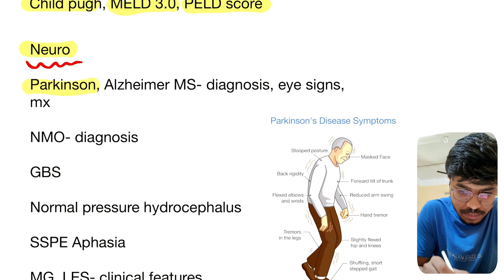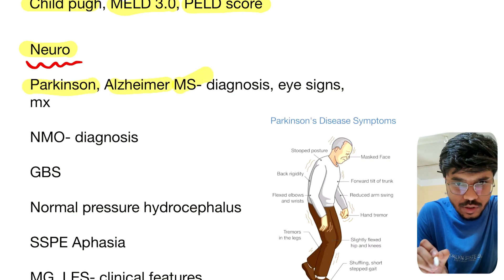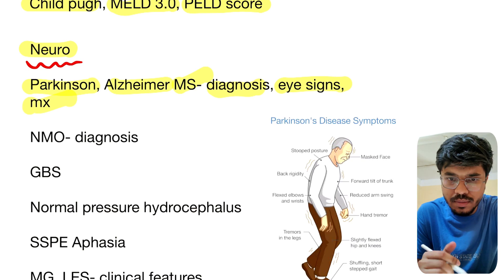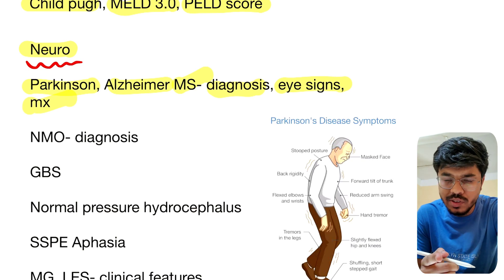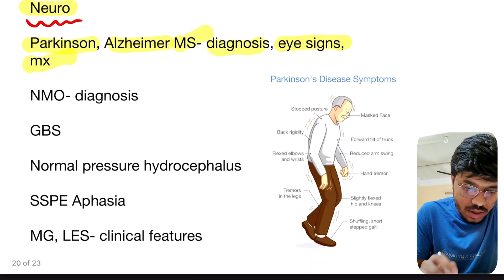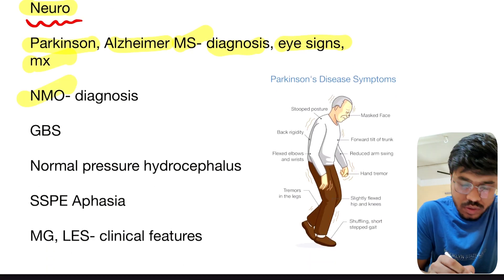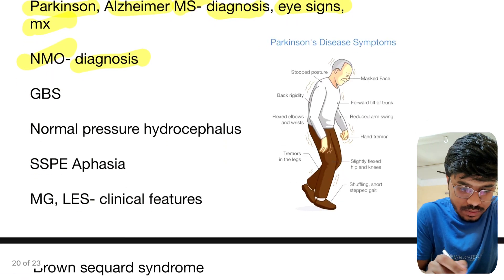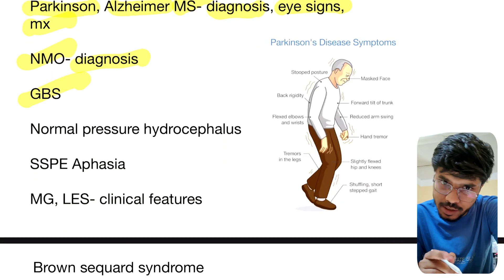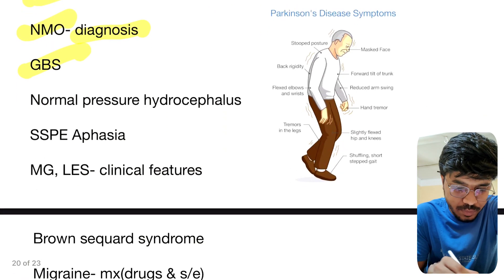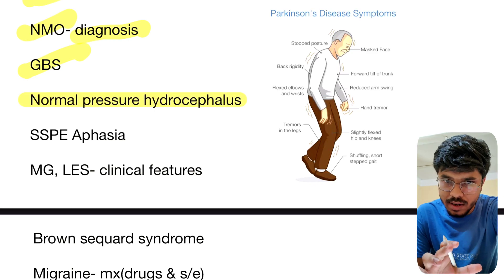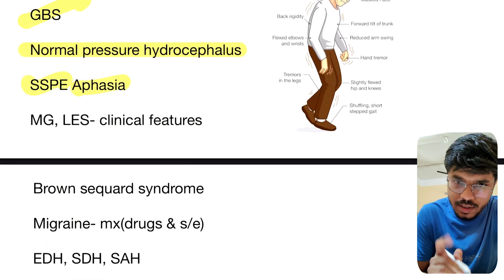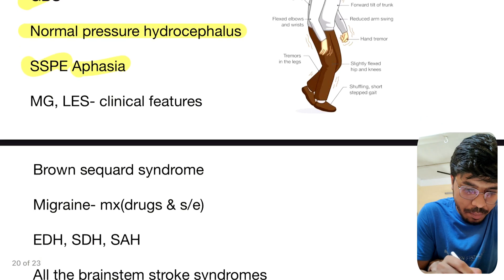From neurology: Parkinsonism, Alzheimer's disease, and multiple sclerosis — diagnosis, eye signs, and management. In multiple sclerosis there is optic neuritis; NMO (neuromyelitis optica) diagnosis is again important. GBS (Guillain-Barré syndrome) is again an important topic. Normal pressure hydrocephalus — the triad is important. SSPE, aphasia — important.